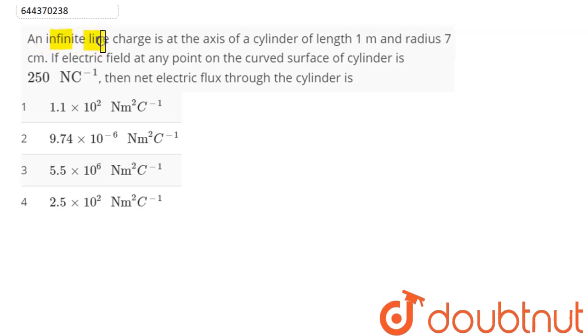Question is, an infinite line charge is at the axis of a cylinder of length 1 meter and radius 7 centimeter. If electric field at any point on the curved surface of cylinder is 250 newton per coulomb, then net electric flux through the cylinder is.